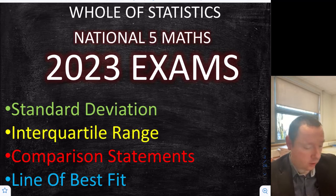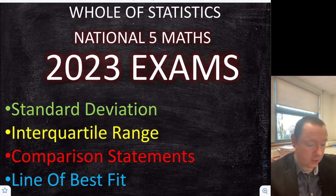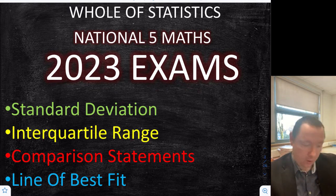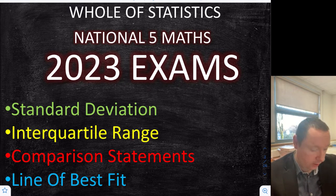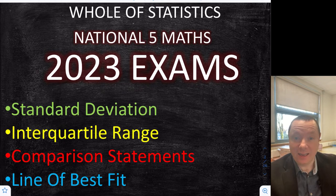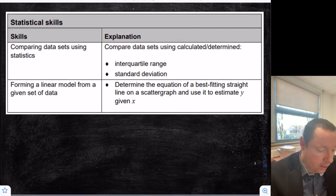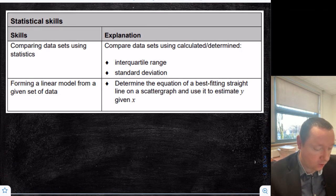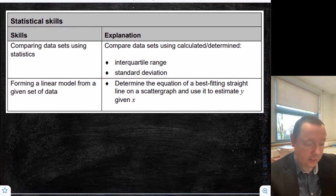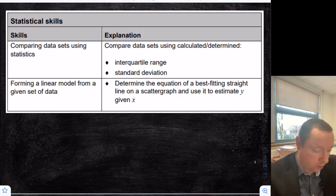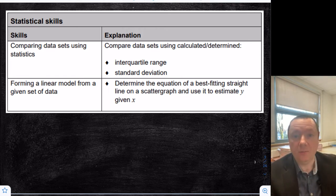Mr Clown here for Clown Maths. Today we're going to be looking at the whole statistics in the National 5 Maths 2023 exams. So that includes standard deviation, interquartile range, comparison statements and the line of best fit. We need to be able to compare data sets using interquartile range and standard deviation, and we need to be able to draw a line of best fit which ties in with straight lines.